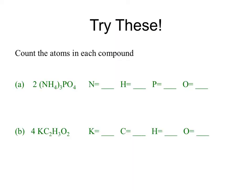Now we're ready for our first self-check. Go ahead and try these two — start with B and then A. Turn off the vodcast and when you're ready to find the answers, turn it back on for the explanation. If we start with B first, you'll notice that there is a coefficient of 4. When we do not see a subscript, we assume it to be 1. Coefficients and subscripts always multiply by each other. So we've got 4 K's, we've got 8 C's, we have 12 H's, and 8 oxygen.